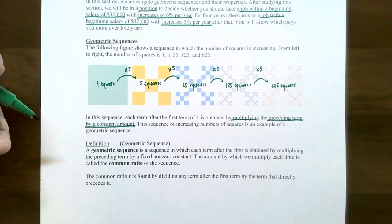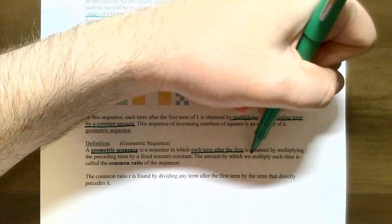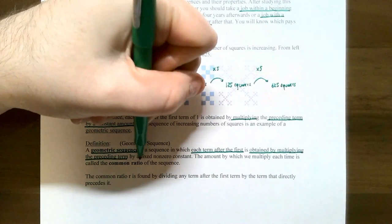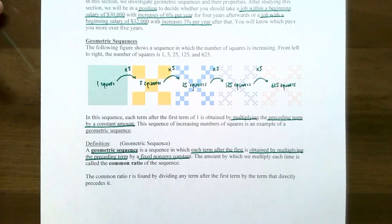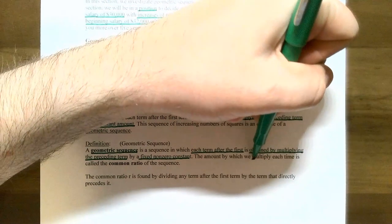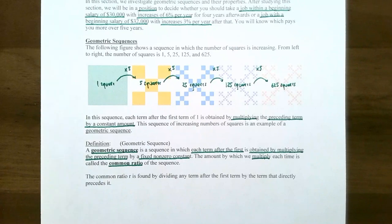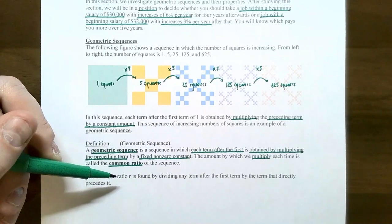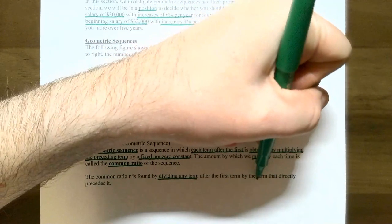A geometric sequence is a sequence of numbers where each term after the first is obtained by multiplying the preceding term by a fixed non-zero constant. It has to be non-zero, otherwise the terms will just become zero. The amount you multiply by from one term to the next is called the common ratio. In the last section we talked about the common difference — adding the same amount from one term to the next. This section is about the common ratio — multiplying by the same amount. The common ratio is denoted with a lowercase r, found by dividing any term after the first by the term that directly precedes it.